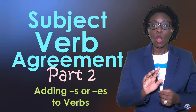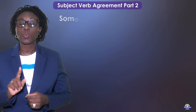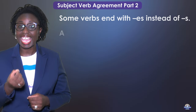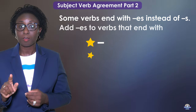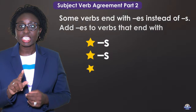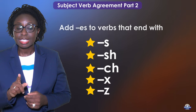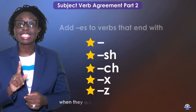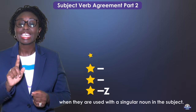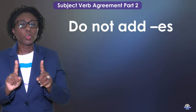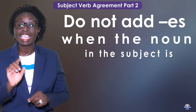Adding S or ES to verbs. Some verbs end with ES instead of S. Add ES to verbs that end with S, SH, CH, X, or Z when they are used with a singular noun in the subject. Do not add ES when the noun in the subject is plural.